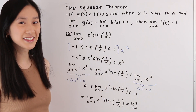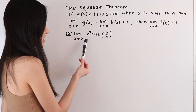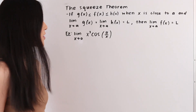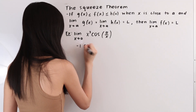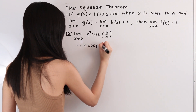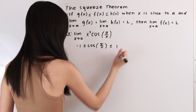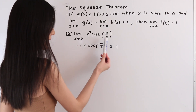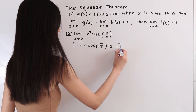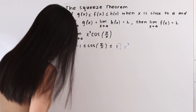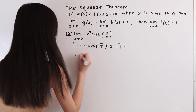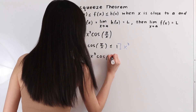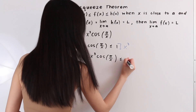Let's take a look at another example. Here we have the limit as x approaches 0 of the function x³ cos(π/x). We know from the graph that cosine is bounded between negative 1 and 1, so: negative 1 ≤ cos(π/x) ≤ 1. We want to match the middle function to our limit, so we multiply by x³, giving us: negative x³ ≤ x³ cos(π/x) ≤ x³.